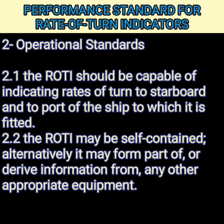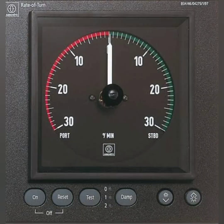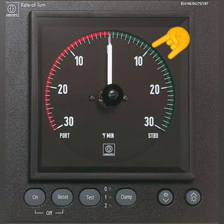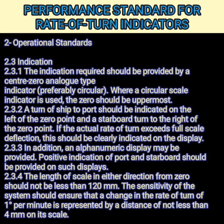The next point is that the rate of turn indicator may be self-contained, or alternatively it may form part of or derive information from any other appropriate equipment. Notice carefully that the rate of turn indicator is circular in shape, zero is right on top, the starboard side is marked in green, the port side in red, the 10-degree mark is bigger than the 5-degree mark, and each degree is represented clearly.